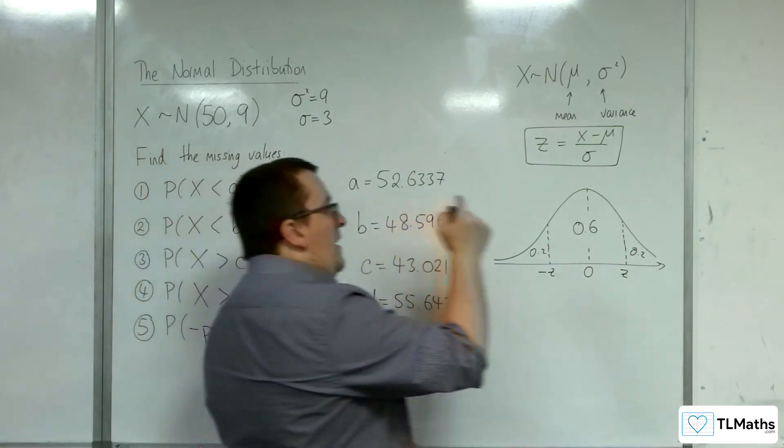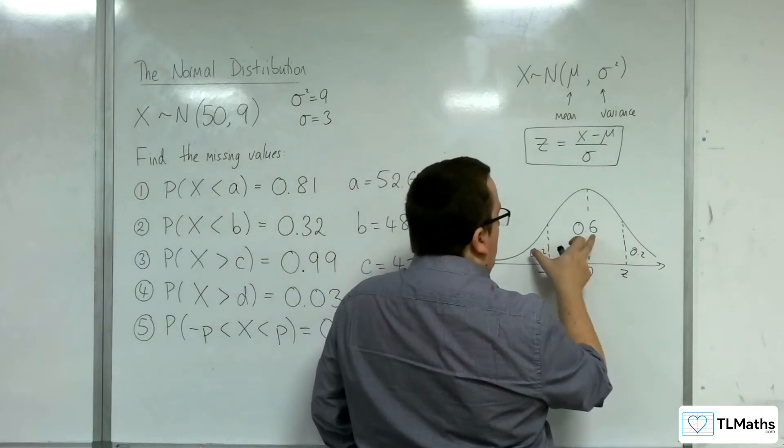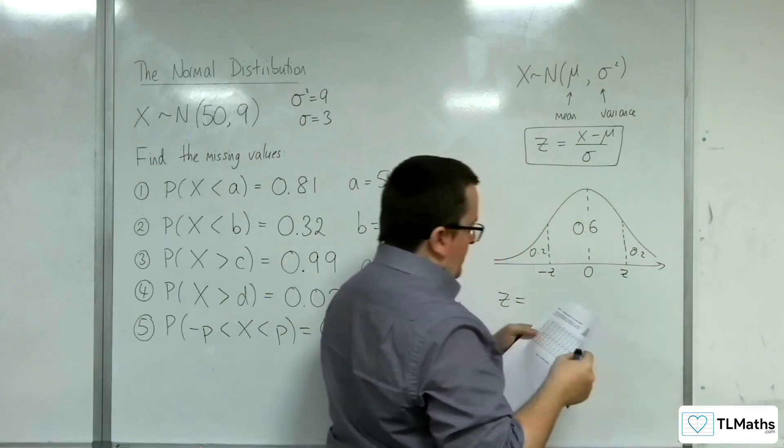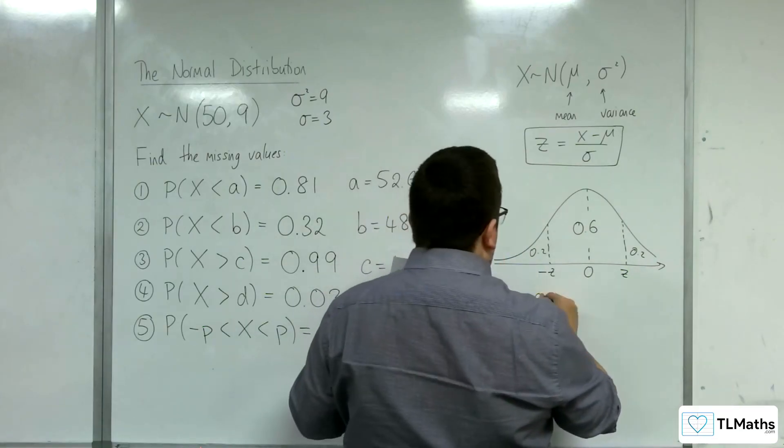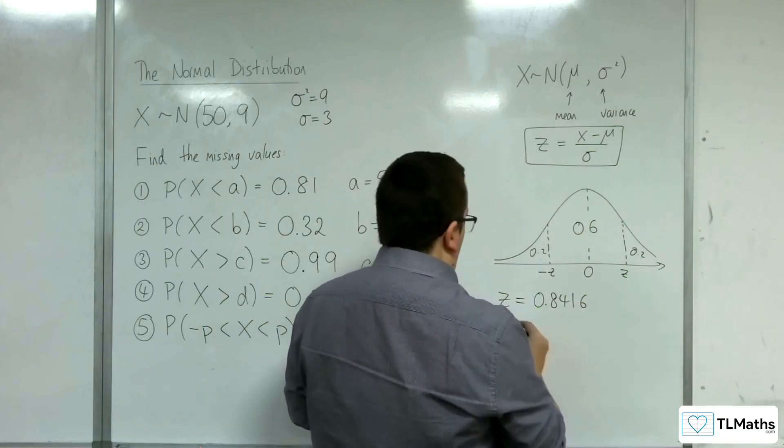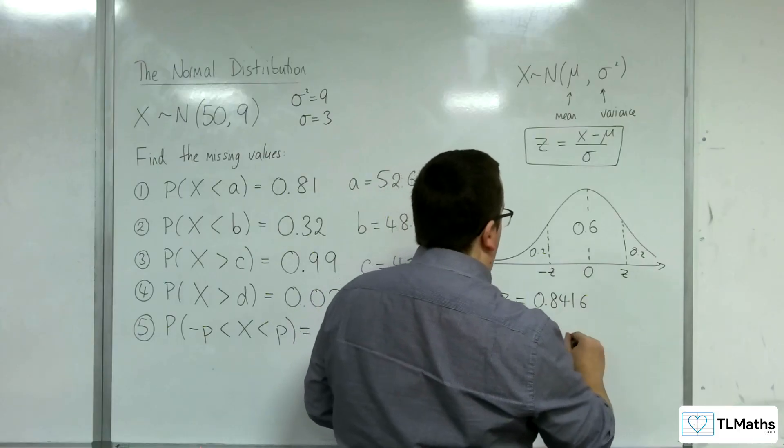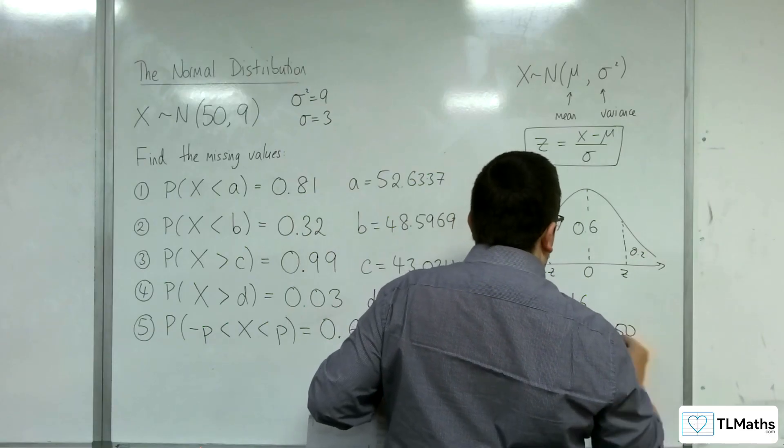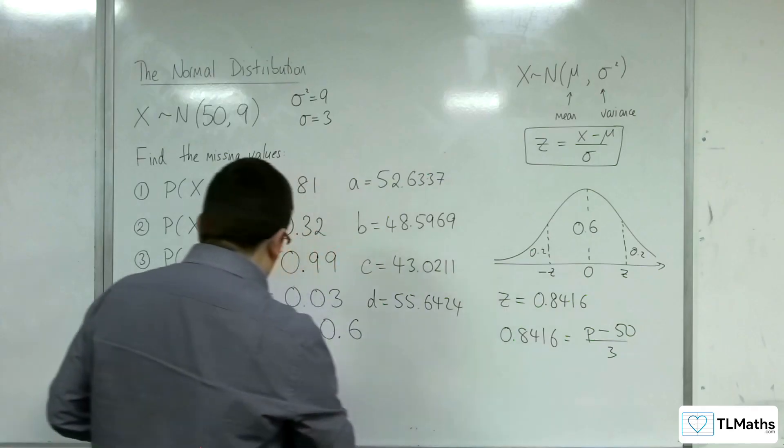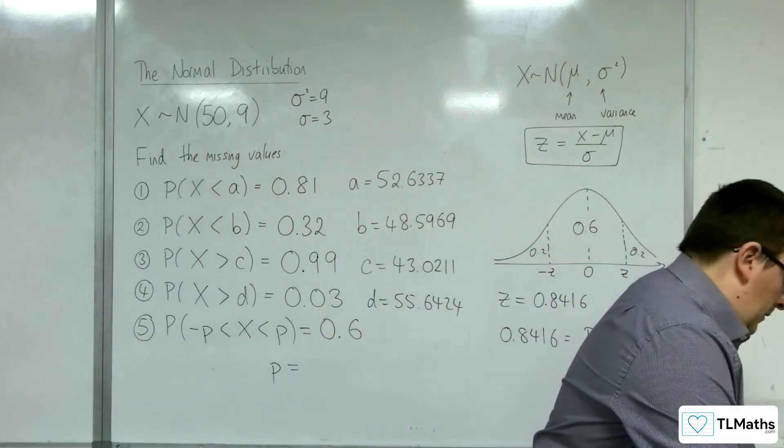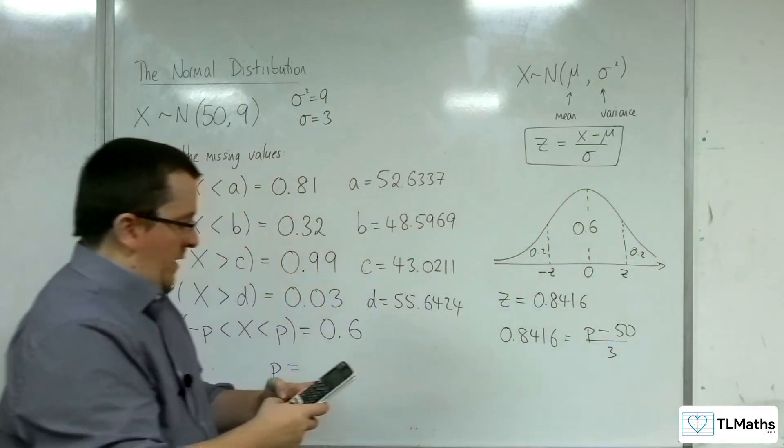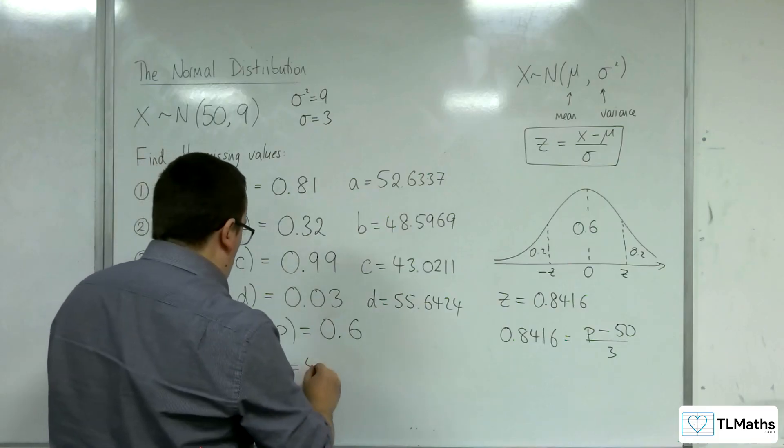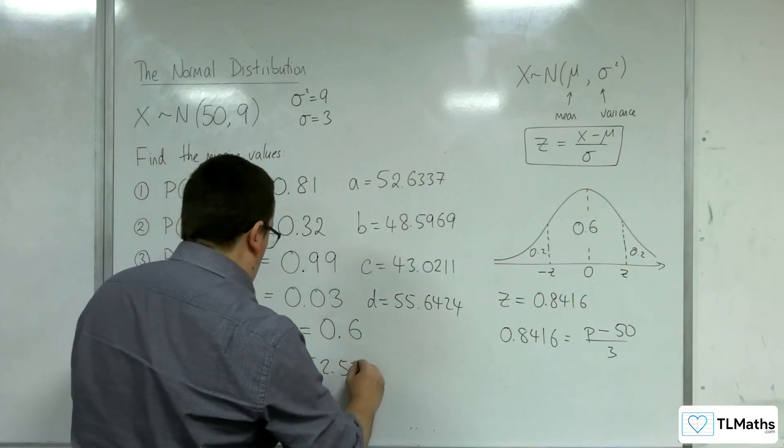So, I could find that z value by looking up 0.8 in my tables. So, 0.8 is 0.8416. So, 0.8416 must be equal to P, take away 50, divided by 3. So, 0.8416 times by 3, add on 50, and we get 52.5248. And that must be the value of P as required.